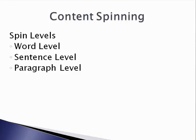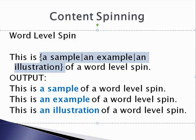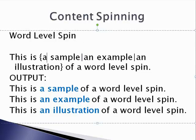Let's take a look at what spinning at the word level would look like. So this is a sample, an example, an illustration. All of that right there is spun at word level spin. What that means is it's going to choose either a sample, an example, or an illustration to create the sentences. By separating each choice by a pipe bar and surrounding the choices with brackets, we create a word level spin.